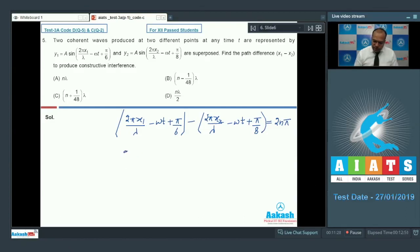So if I solve this equation further, then I can write 2π by λ into X1 minus X2 is equal to 2π into N minus 1 by 48.